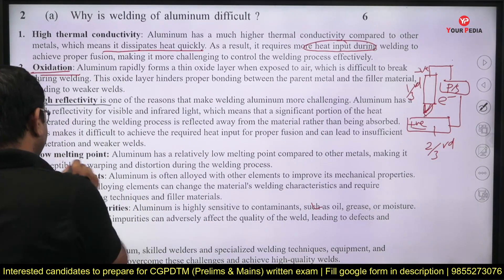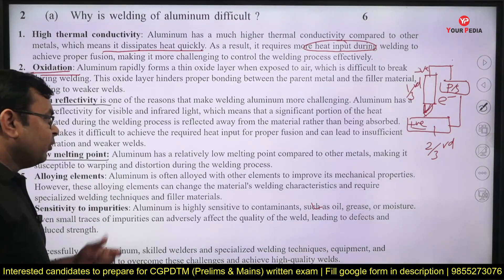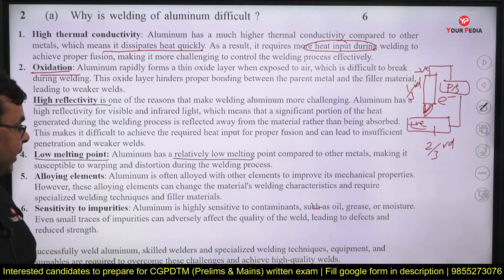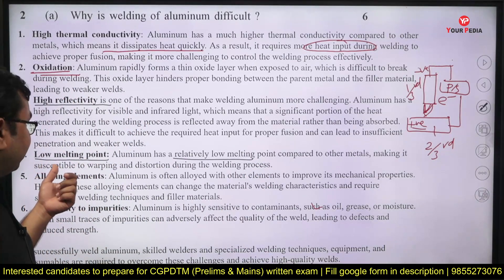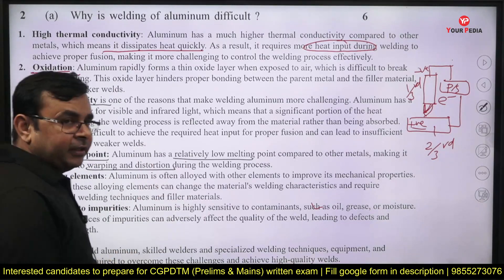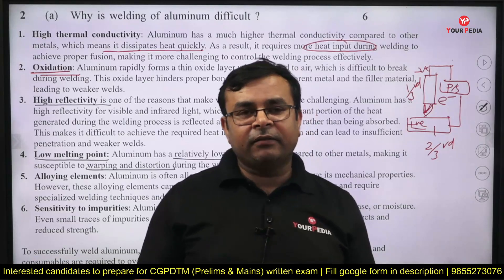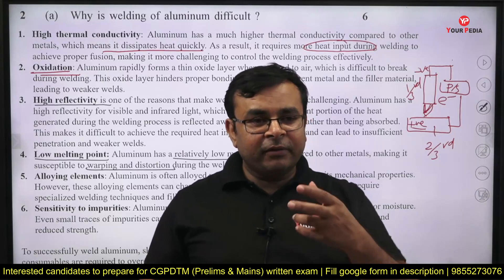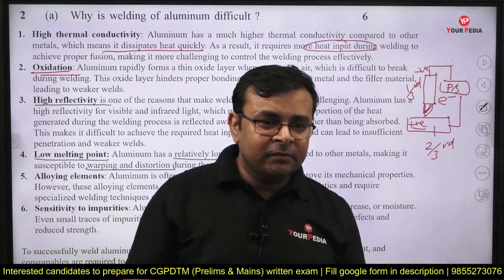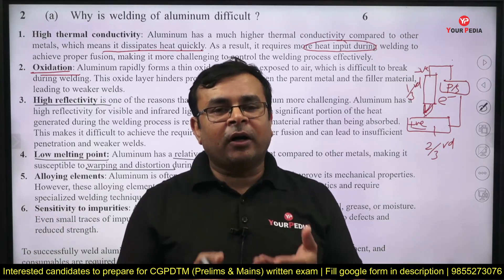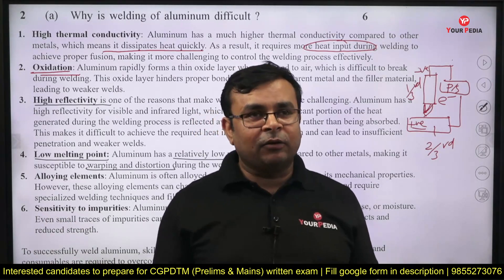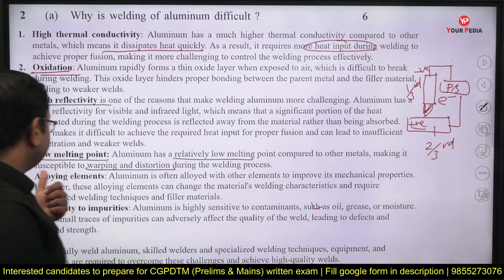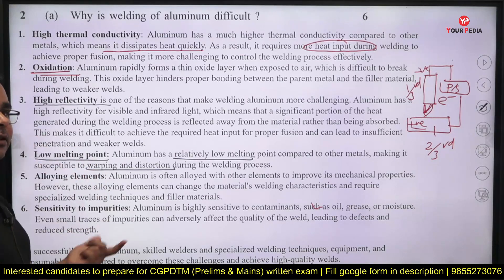Next is low melting point. Aluminum has a relatively low melting point — around 600 to 650 degrees centigrade — compared to other metals, which makes it susceptible to warping and distortion. In the arc welding process, the heat produced is very high, and when you weld very low melting temperature alloys, the workpiece may warp or distort because of the high heat and residual stresses induced.